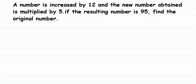We don't know what the number is, so we assume that number to be equal to x. Let number be x — that's our assumption. Now let's frame the linear equation. They say the number is increased by 12; increased means we're adding 12, so it becomes x plus 12. This forms a new number.